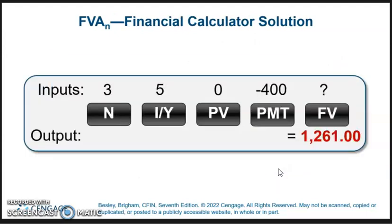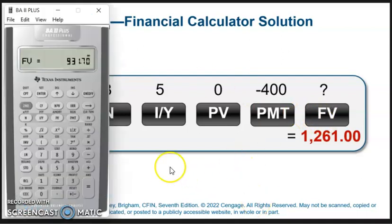In the calculator, it's 3 in N, 5 I/Y, so three years, interest rate's 5. In this case, there's no present value. We only have a payment, a $400 payment, so negative 400 since those are outflows. And then compute future value.